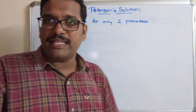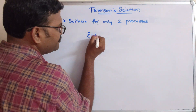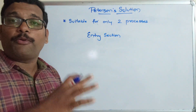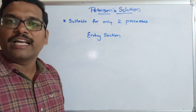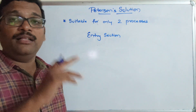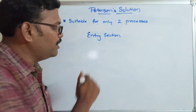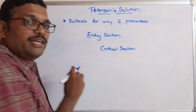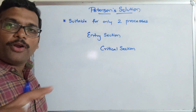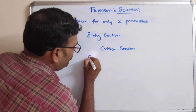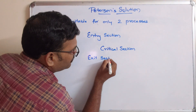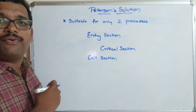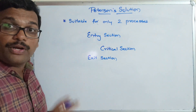Let us write the structure of a critical section problem. There will be an entry section. In this section, we have to check whether a process is already in the critical section. If any process is in the critical section, the other process has to wait in the entry section itself. Then comes the critical section — if there is no process in it, one process can enter. After that is the exit section. This is the basic structure.